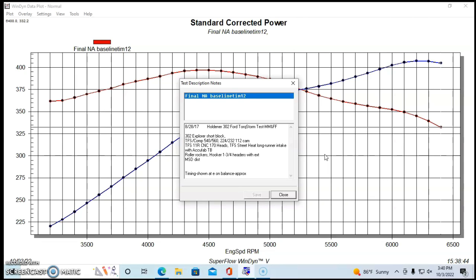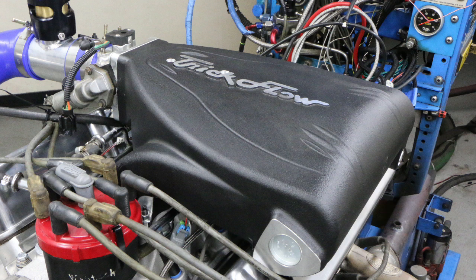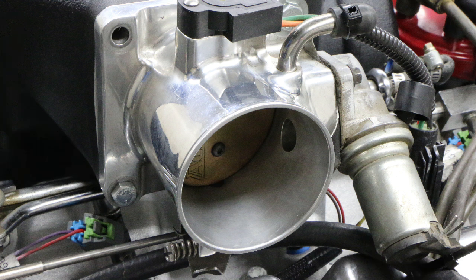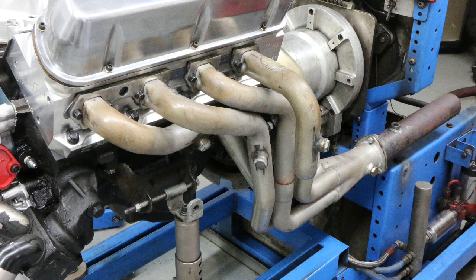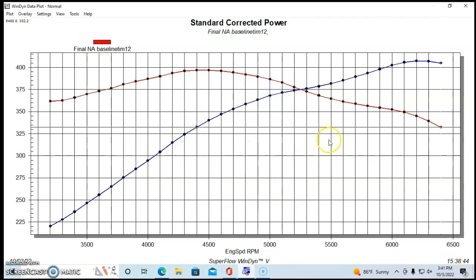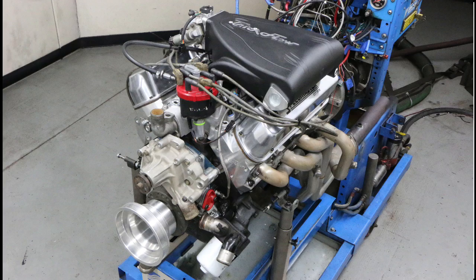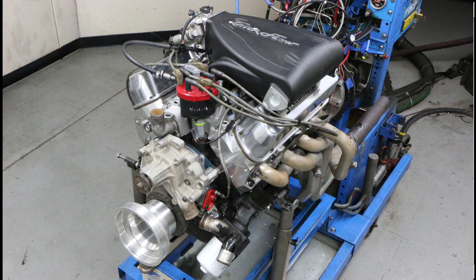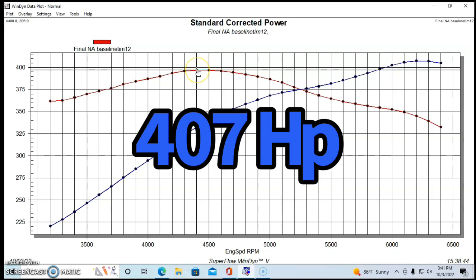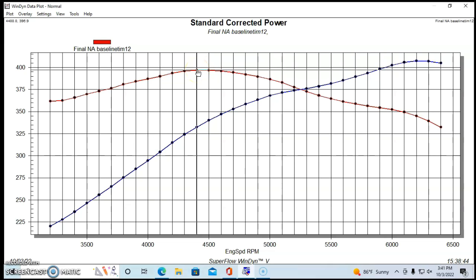The heads and cam were topped with a TFS Street Heat long runner intake manifold to replace the Explorer version. We had an Accufab throttle body. We had inch and three quarter headers. And obviously we had an optimized tune with a Holley HP management system. And all of that worked out fairly well. With that combination and with our heads cam intake Explorer short block, we produced 407 horsepower and 397 foot pounds of torque.